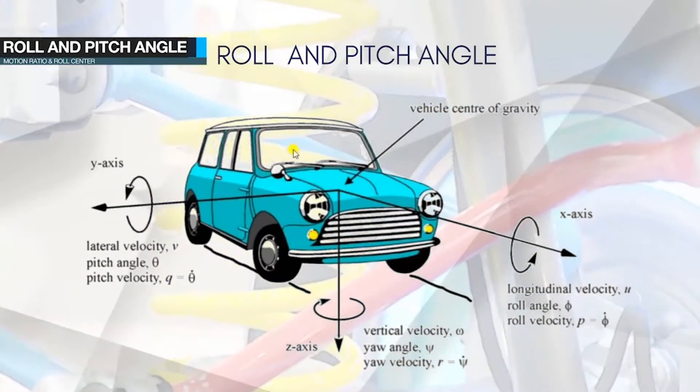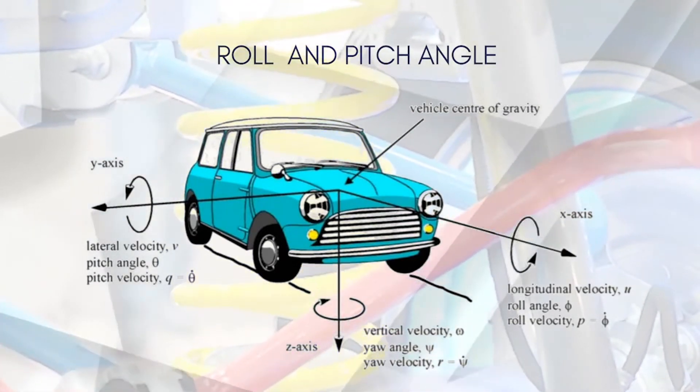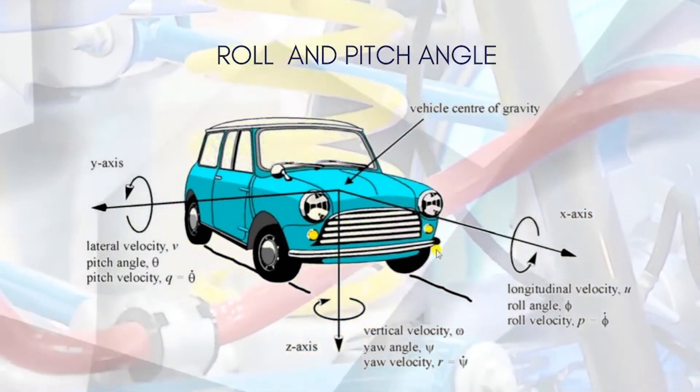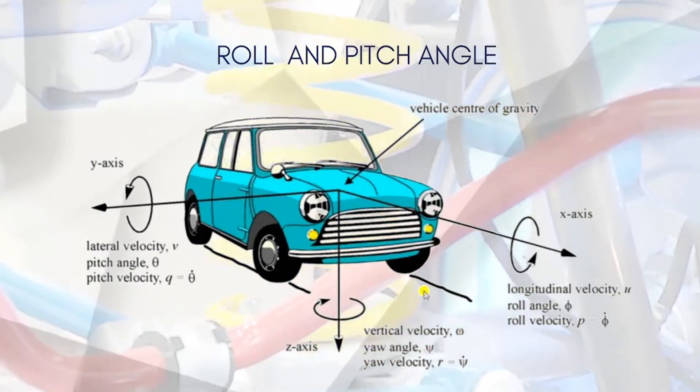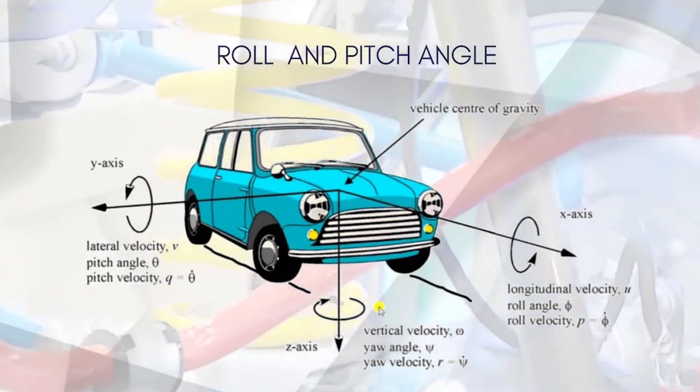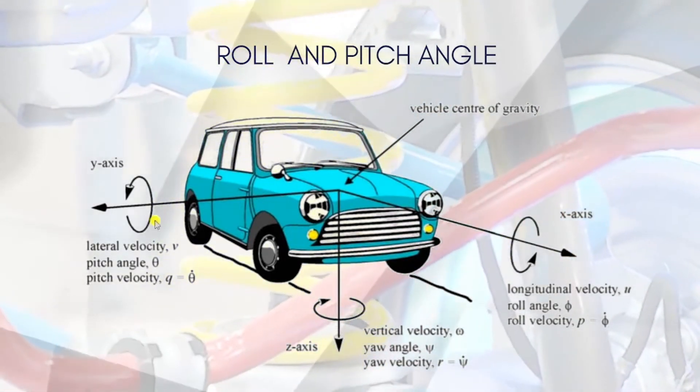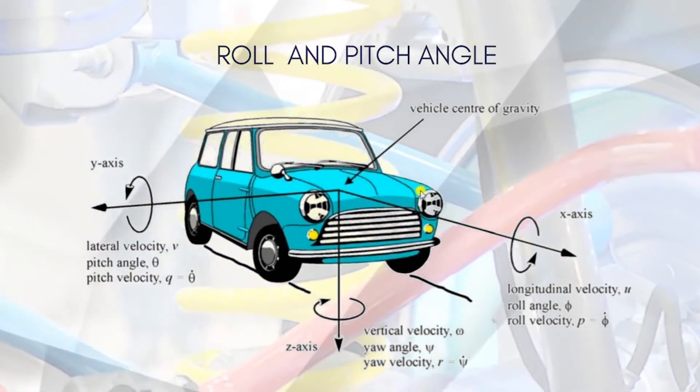Before we go to the topic of motion ratio, it's very important for us to know what is a roll and pitch angle. If you can see in this image, you have three axes: x, y, and z axis, and you also have the rotation along each of these axes.